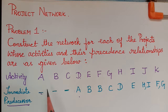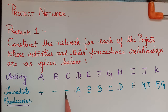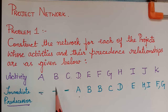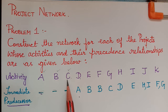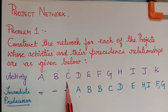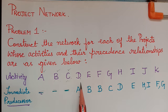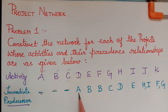Activities A, B, and C do not have a predecessor, which means they start simultaneously — these three are the starting activities. After deciding the starting activities, we should check which are the ending activities. The activities which do not appear in the predecessor list will become the ending activities.